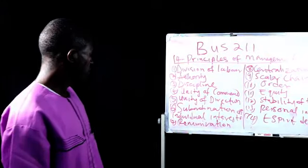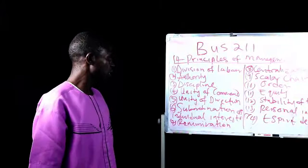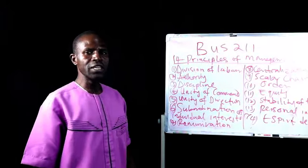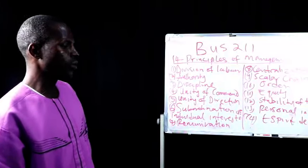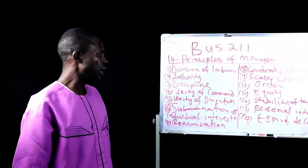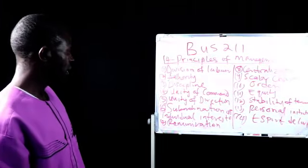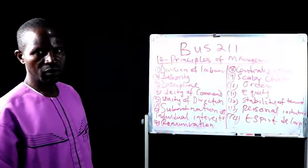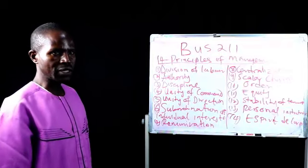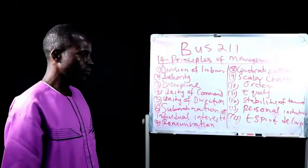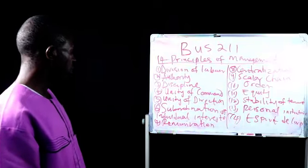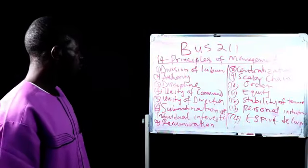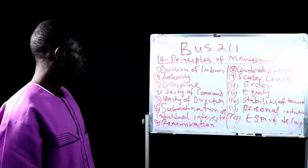Another principle is the principle of subordination of individual interests to the overall interests of the organization. Any employee coming into an organization has his own goals and objectives, which are always at variance with the goals of the organization. So, there is a need for the employee to subsume his own goals to the overall goals of the organization.